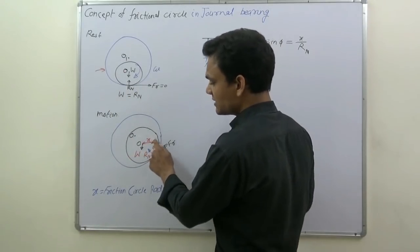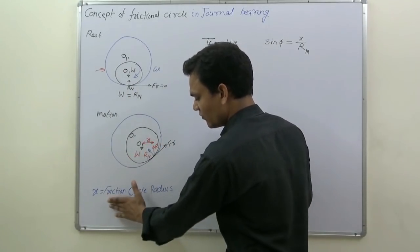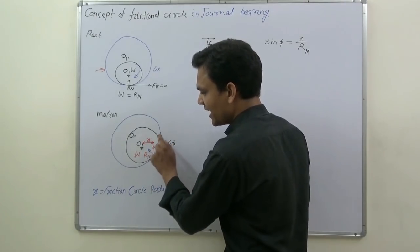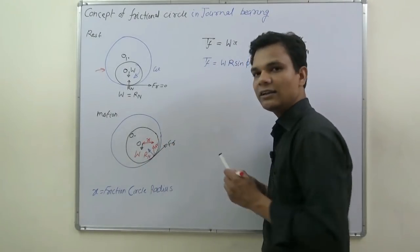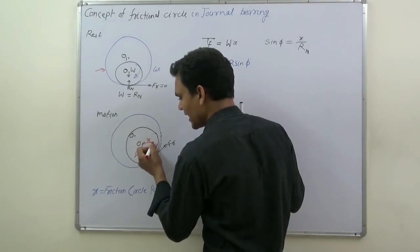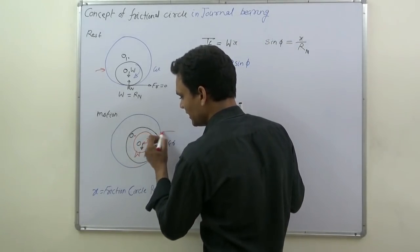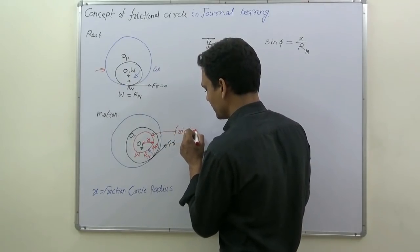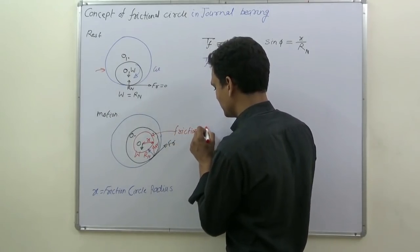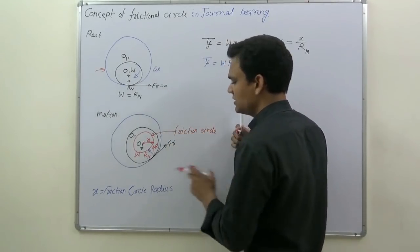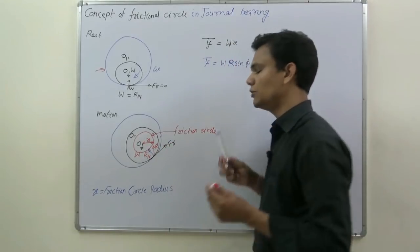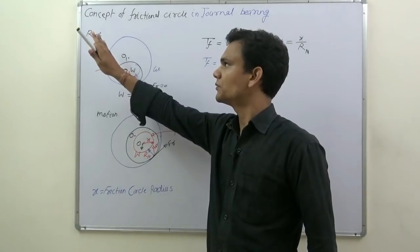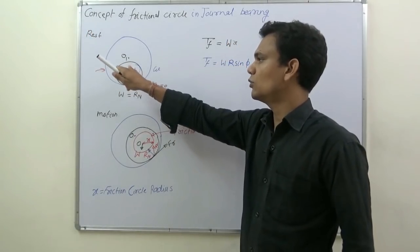The distance of R-dash from the center of the shaft O is known as the friction circle radius, which I denote by x. If we draw a circle with x as the radius, that circle is known as the friction circle — it comes into the picture due to friction.